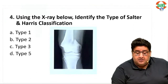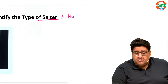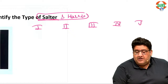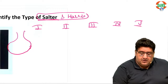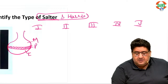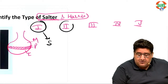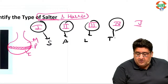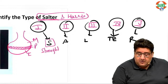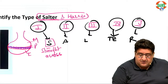For the fourth question, using the X-ray, identify the type of Salter-Harris classification. There are types 1 through 5. You remember the Salter-Harris classification with the mnemonic SALTER. S means straight across — straight across the physis — that is type 1. A stands for above, meaning above the physis, which is the metaphysis. In type 2, you see a triangular metaphyseal bone fragment. This is what is called the Thurston-Holland sign.